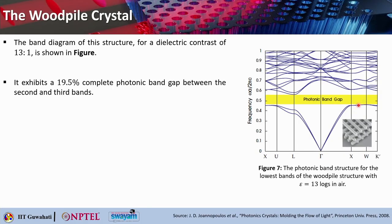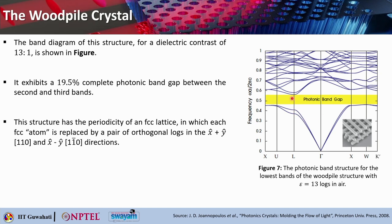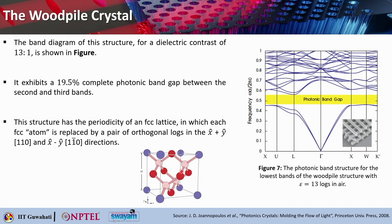This particular structure exhibits around 19.5 percent complete photonic bandgap between the second and the third bands. The structure has the periodicity of an FCC lattice, where each FCC atom is replaced by a pair of orthogonal logs — one lying along x, another lying along y.